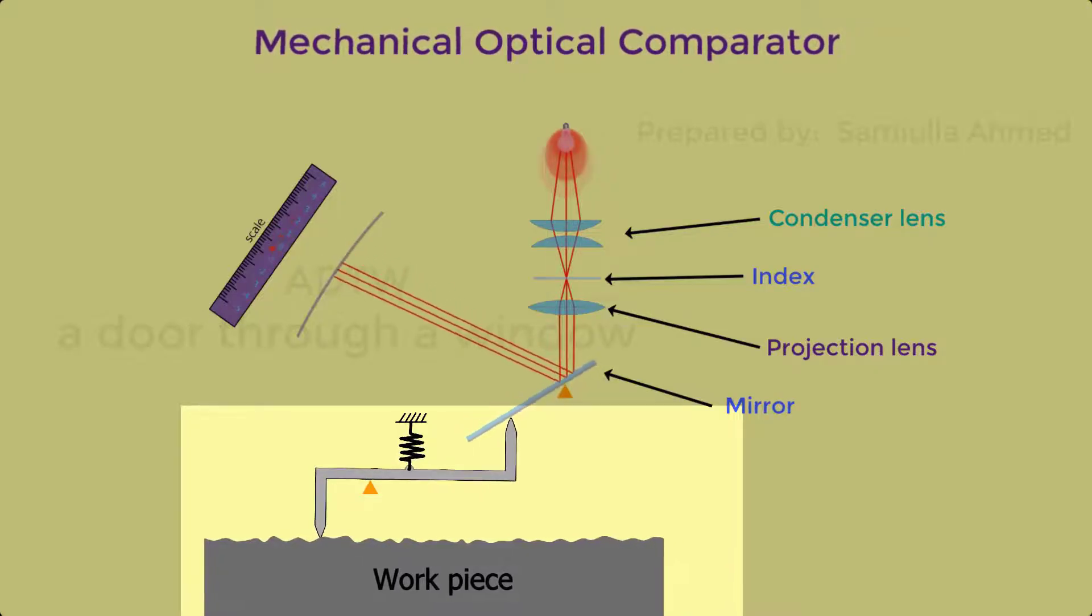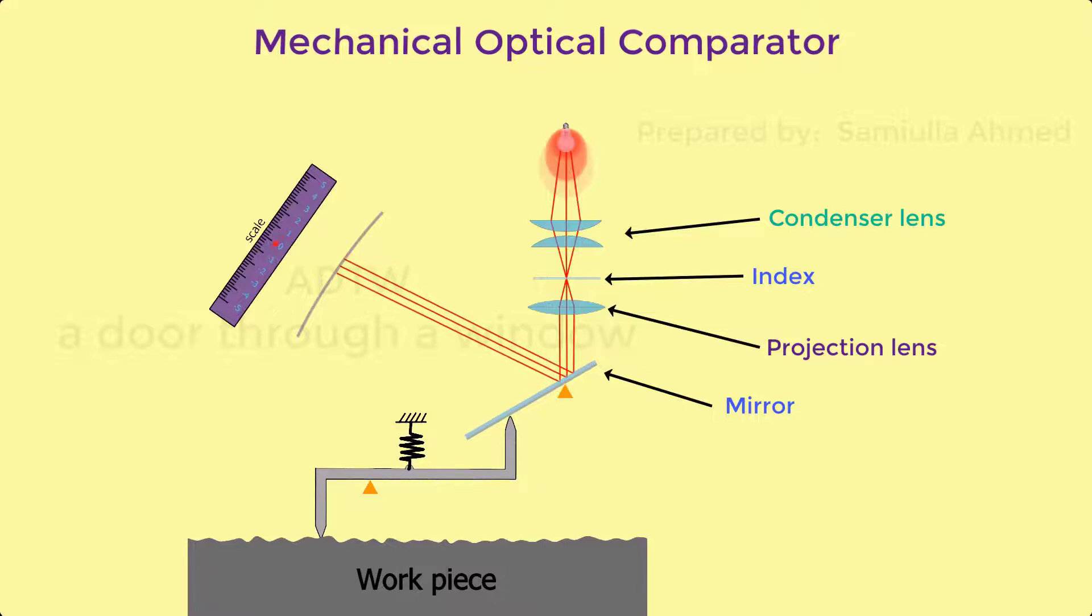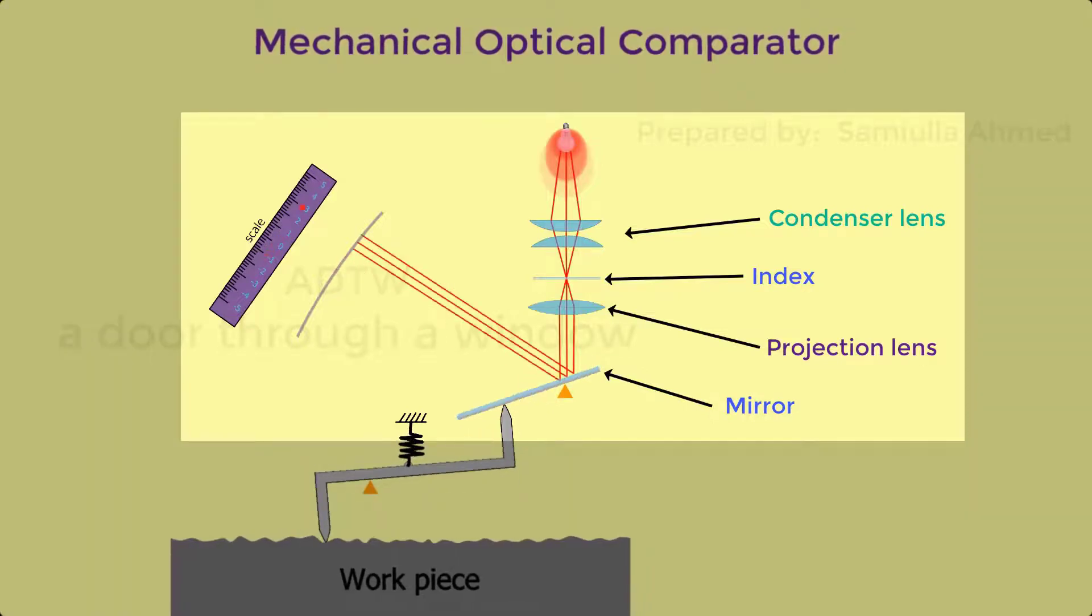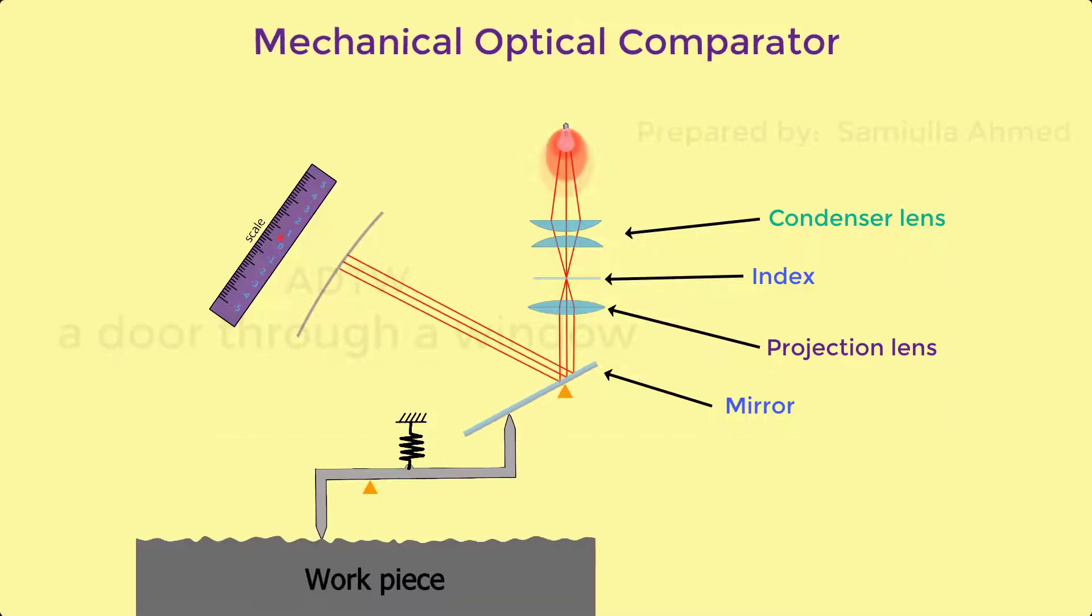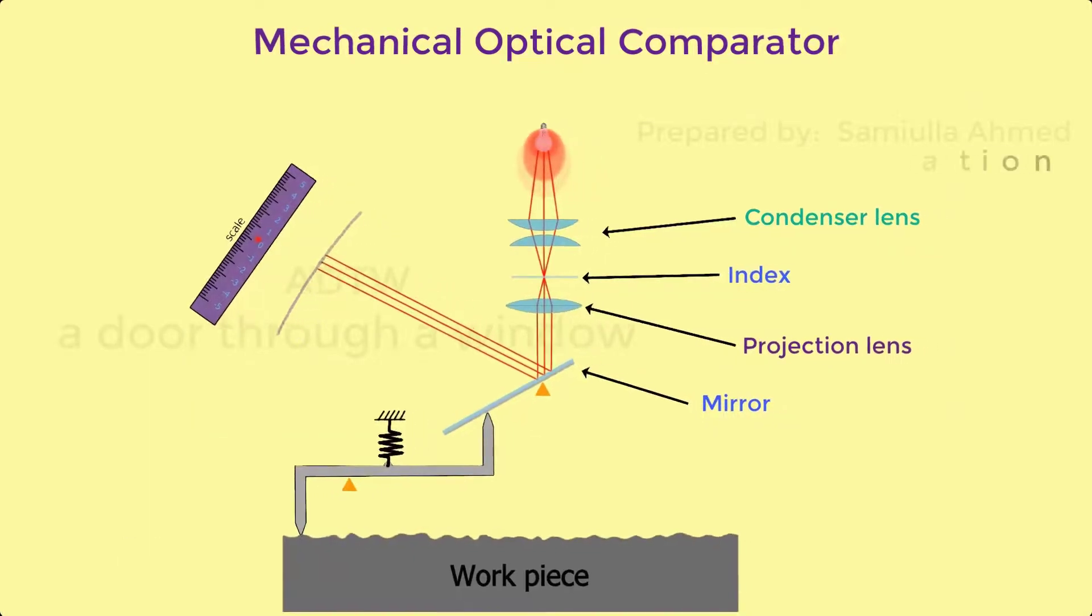The amplified mechanical movement is further amplified by the optical system due to tilting of the plane reflector. The amplification of the comparator is in the two stages.